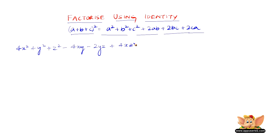So here, we can write 4x² as (2x)², and y² as (-y)².